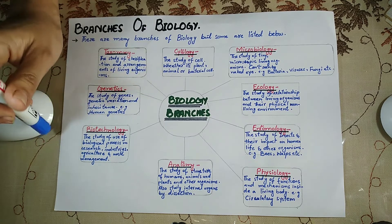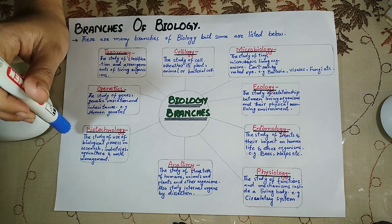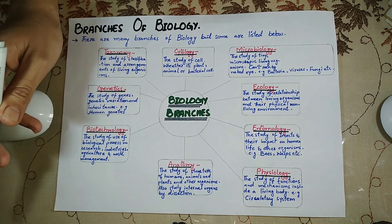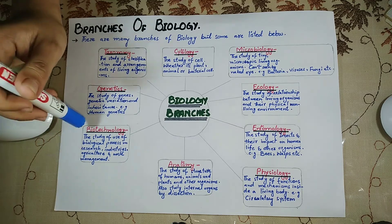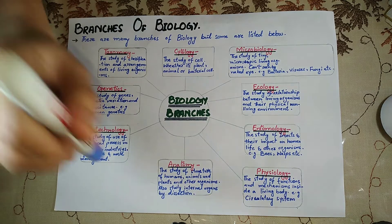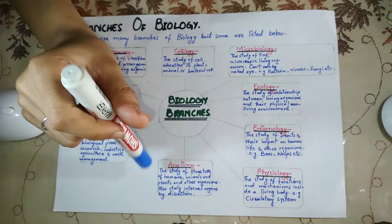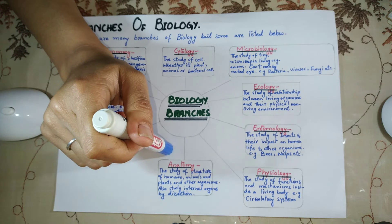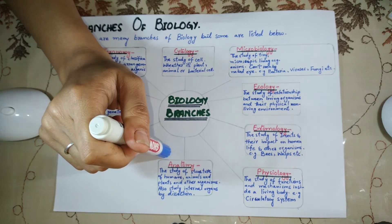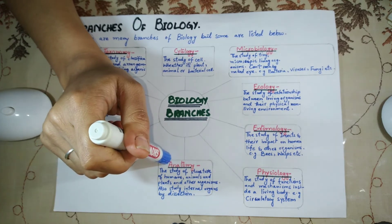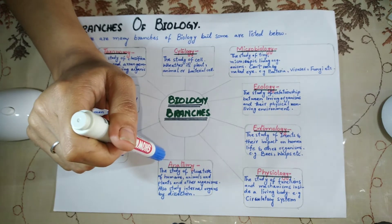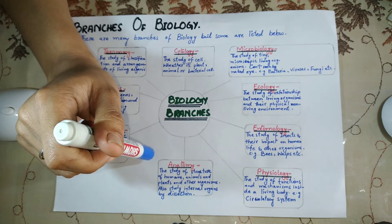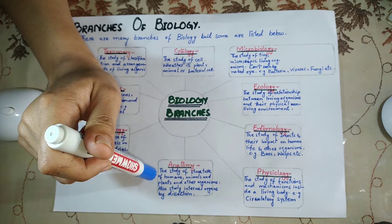Biotechnology is the study of the use of biological processes in research, industry, agriculture, and waste management. Anatomy is a combination of two Greek words: 'ana' and 'tomy'. Ana means up and tomy means to cut. Anatomy is the study of the structure of humans, animals, and plants, and also the study of internal organs by dissection.